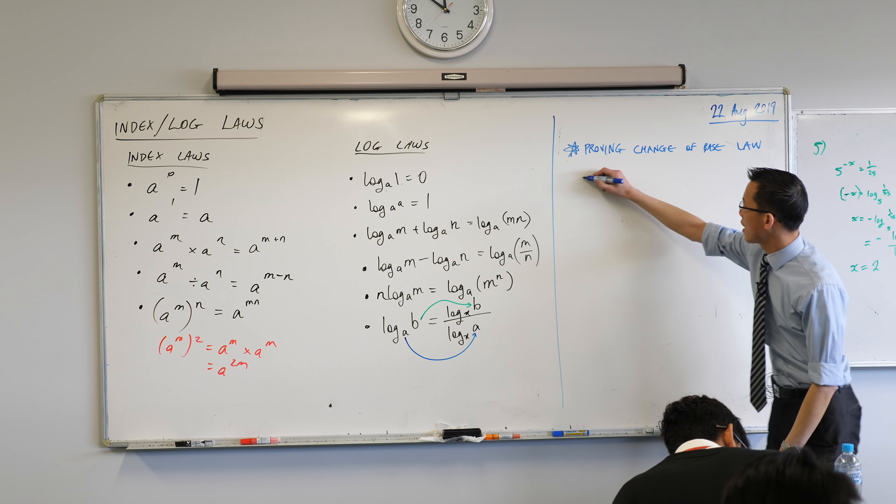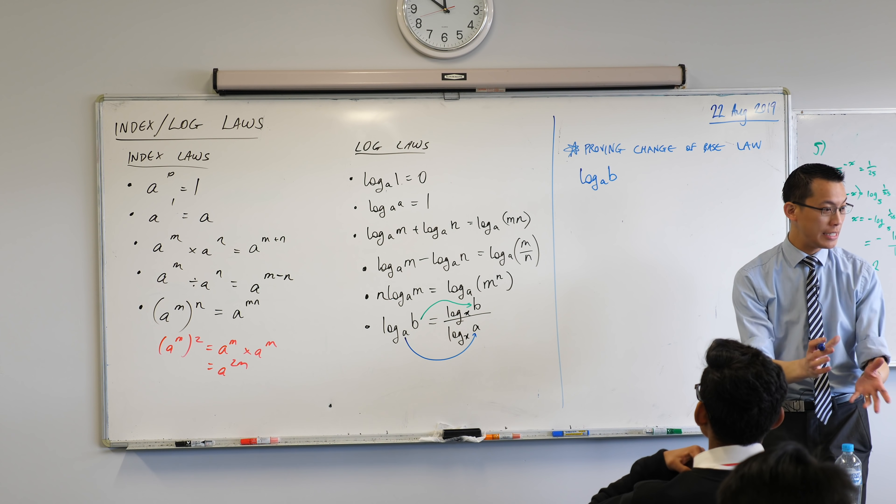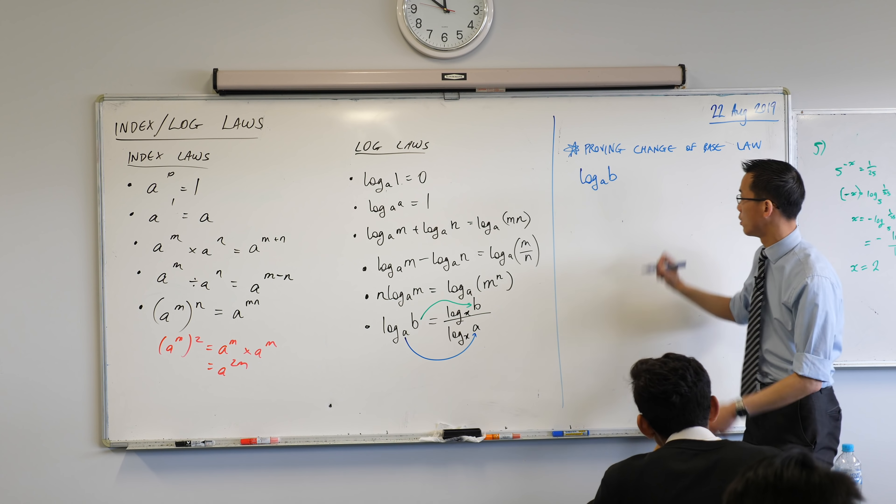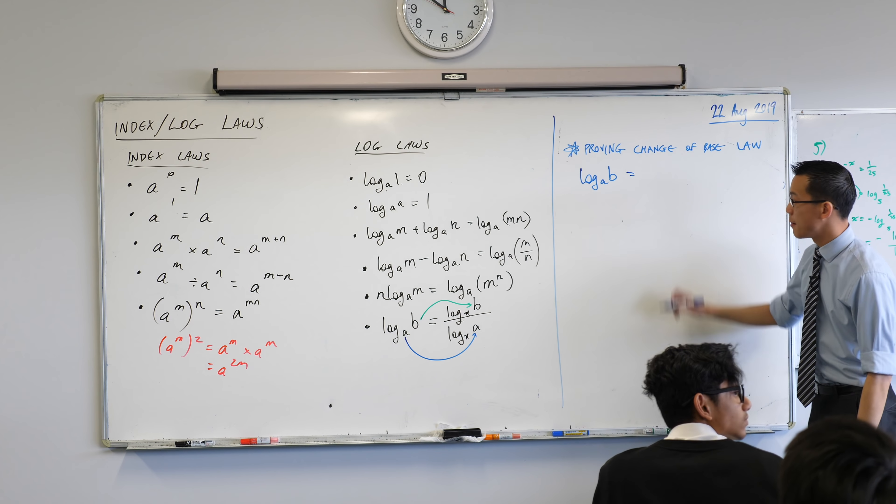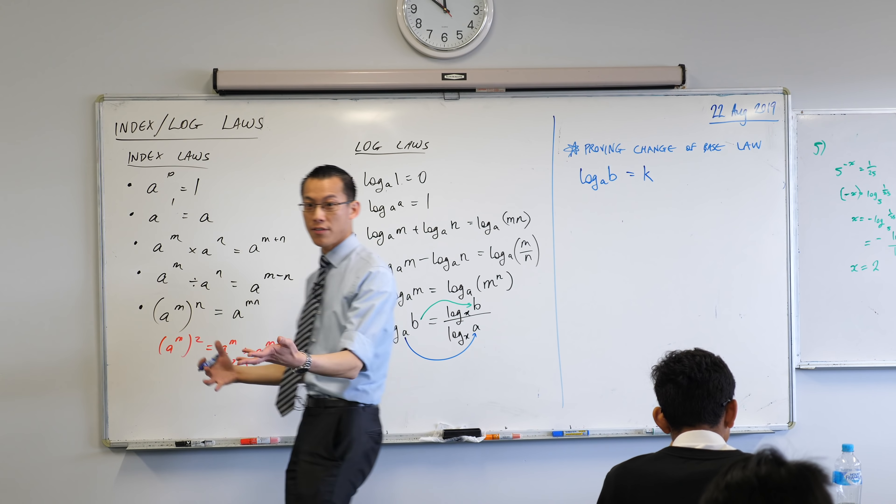So here's the way we're going to do it. Log base a of b, this guy over here. Suppose we did not know that it was equal to this. Just suppose. So we're trying to work out what is it equal to. I'm going to give it a name. I'm going to call it k, like so.